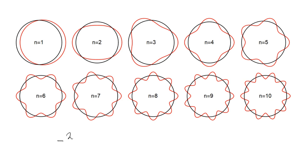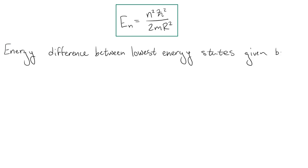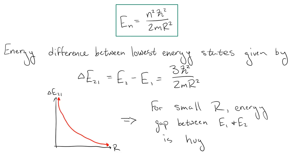This energy can be found by just solving the Schrödinger equation and is given by this expression here, where n is the number of peaks, h-bar is Planck's constant, m is the mass of the bead, and r is the radius of the loop. Now, let's compare the two lowest energy states, E1 and E2. Their difference is given by 3h-bar squared over 2mr squared. So, if r is small enough, the amount of energy the bead would need to access the next to lowest energy level would be huge.